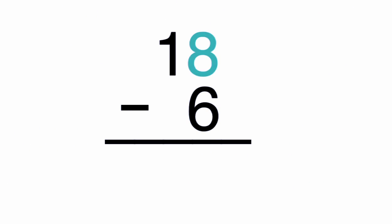First, subtract 6 from 8 in the ones place. 8 minus 6 is 2, so put a 2 below the line. There is nothing below the 1 in the tens place to take away, so bring the 1 down below the line. The answer, or difference, is 12.